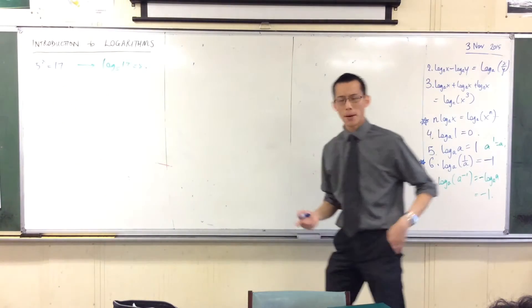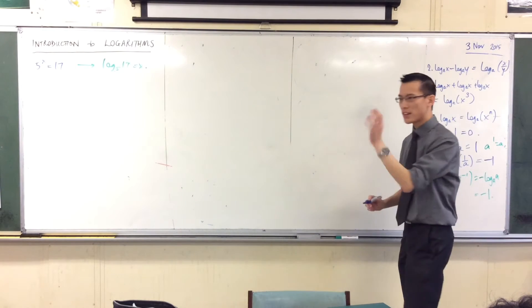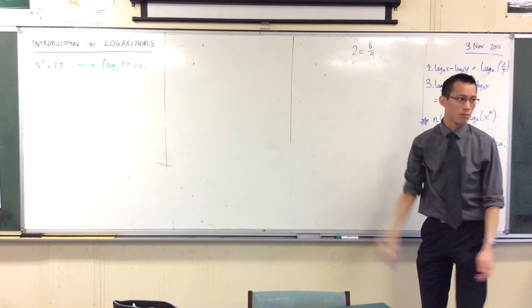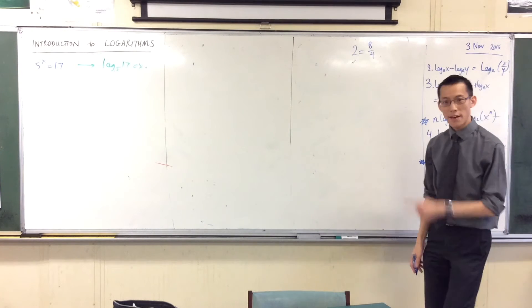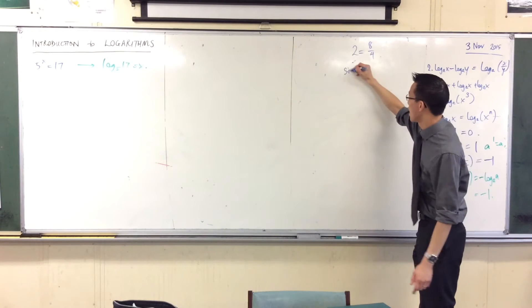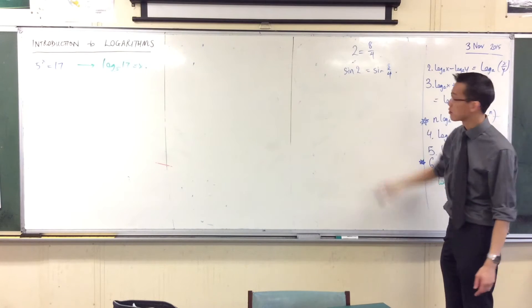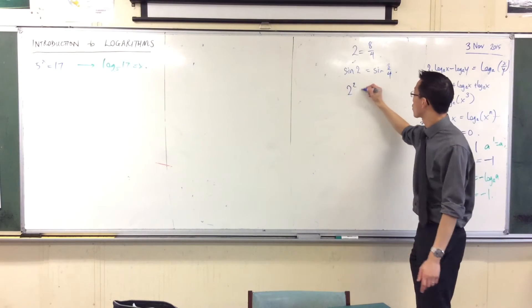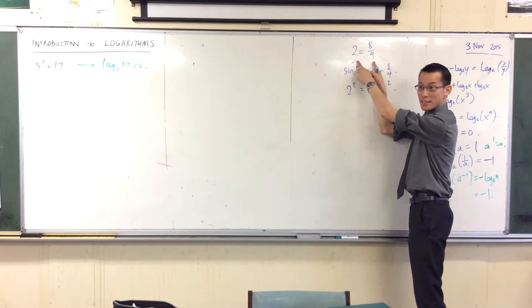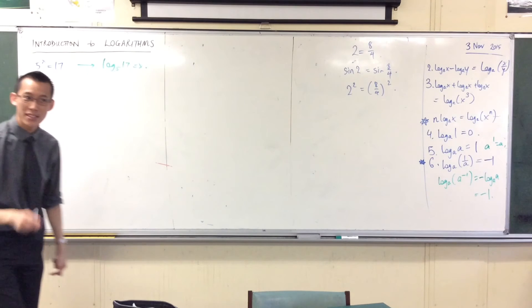Now, I want you to remember, we've been saying logs, exponentials, they're just functions. So for example, if I have a number like 2, do you agree, is 8 divided by 4? You okay with that? So therefore, I could do a function to both sides here. For example, I can go sine 2 equals sine 8 on 4. I can do a function to both sides. I could square both sides. 2 squared will be 8 over 4 squared. If these two things are the same, I can do any function I like to both sides, and it's all good.